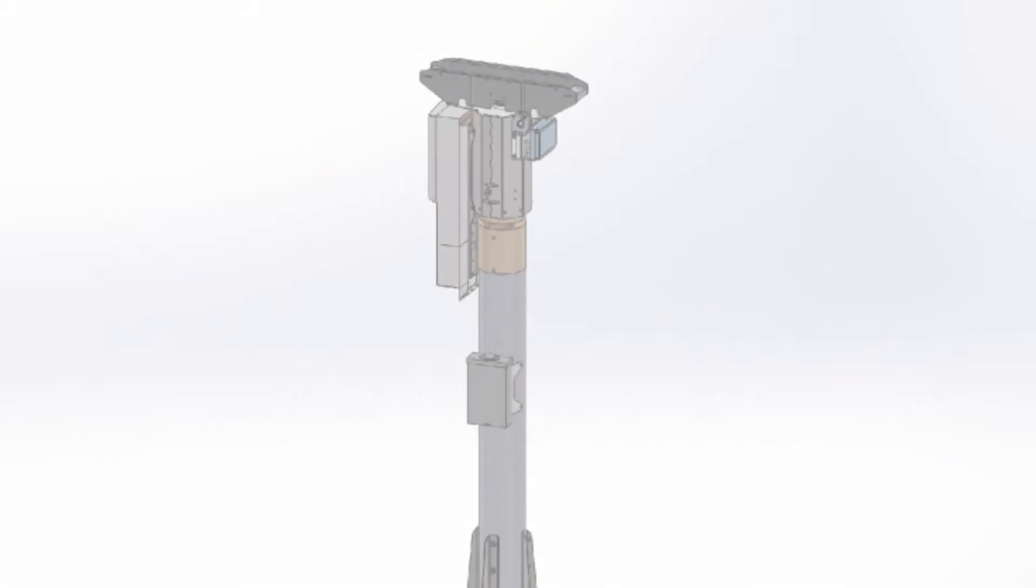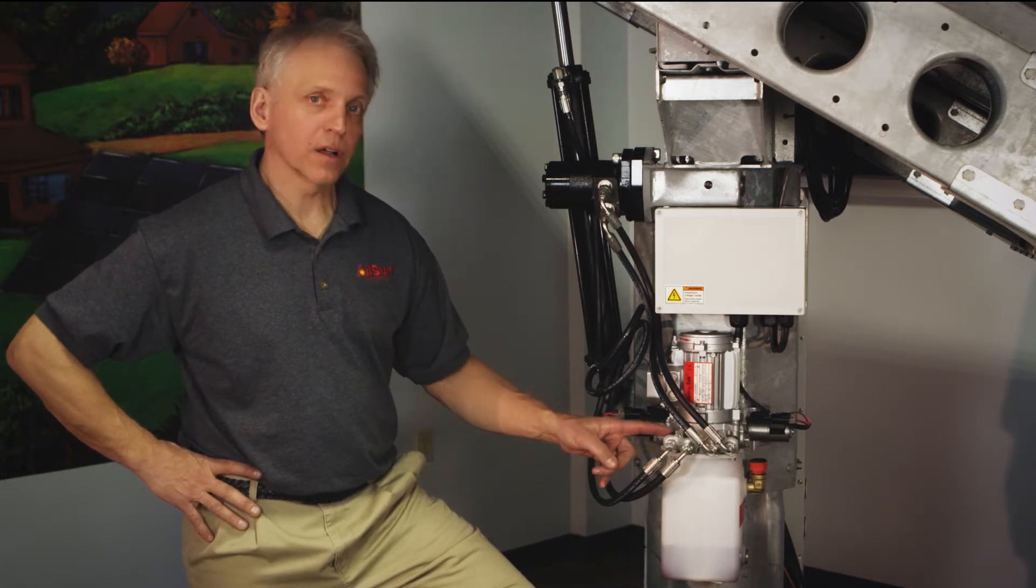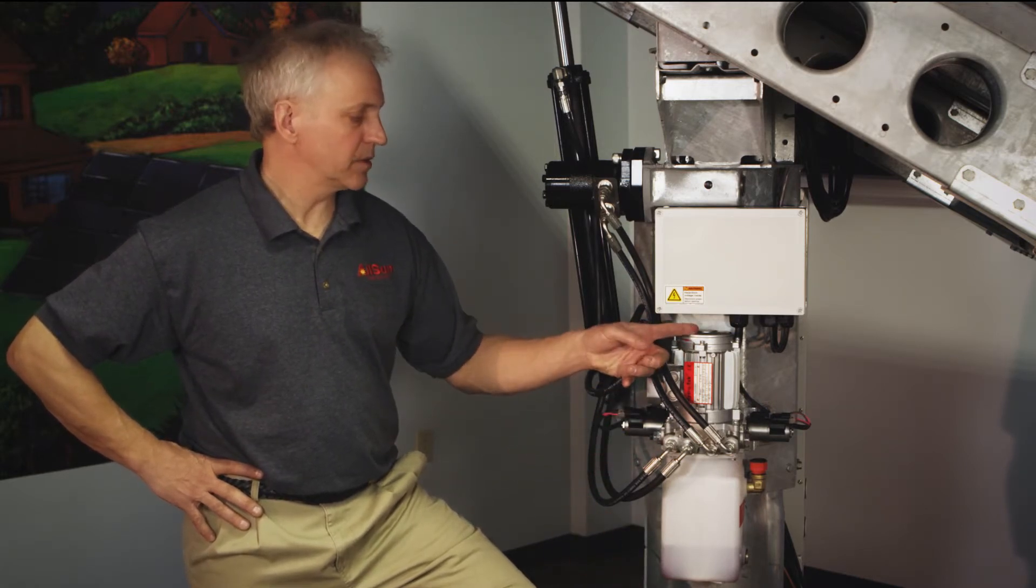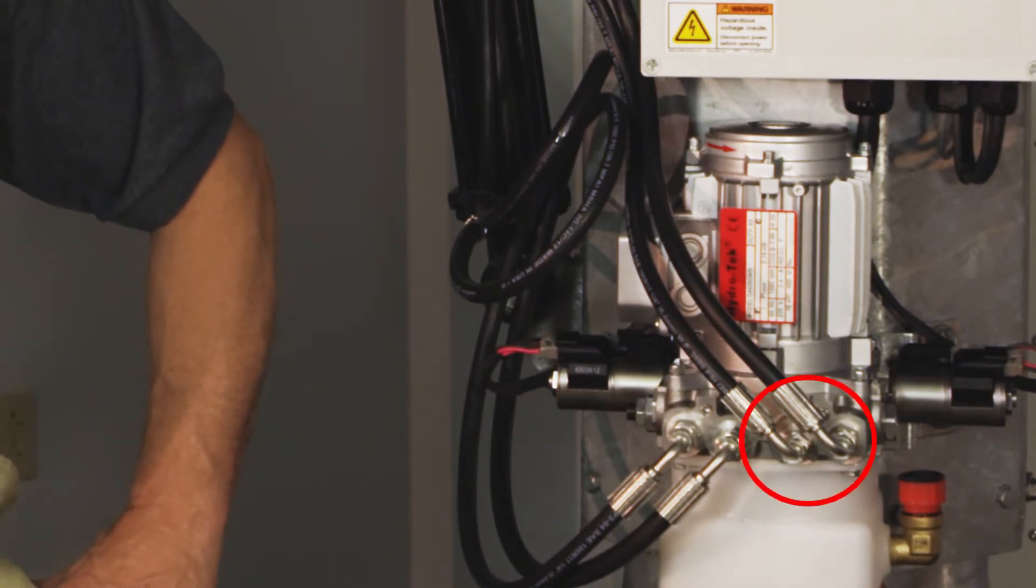The hydraulic pump unit, or the HPU, consists of three separate parts: the fluid reservoir, the aluminum block, and the electric motor. The hoses on the left side of the aluminum block lead to the hydraulic cylinder. The hoses on the right side of the aluminum block lead to the yaw motor.